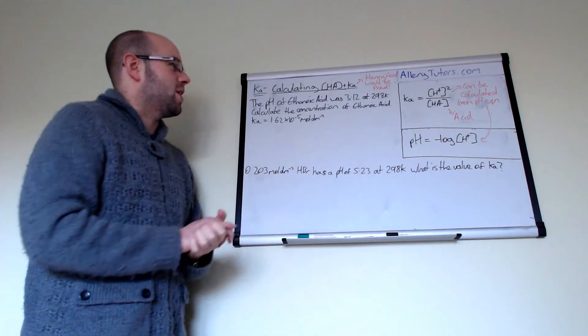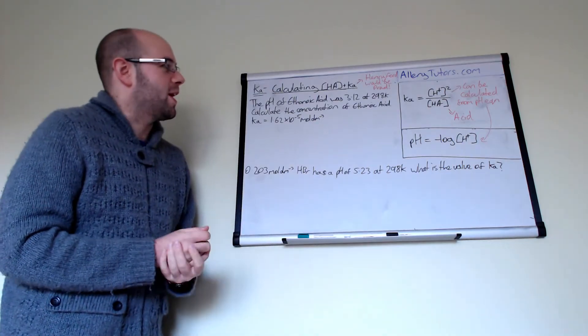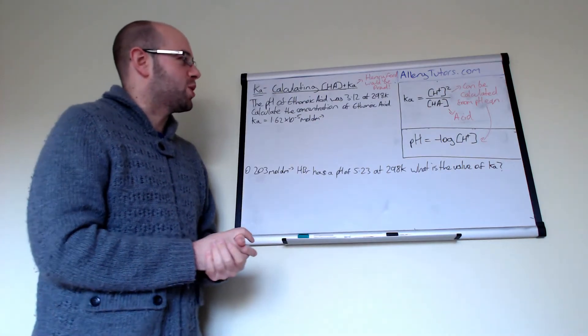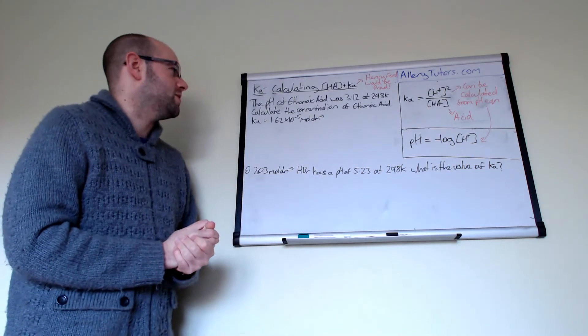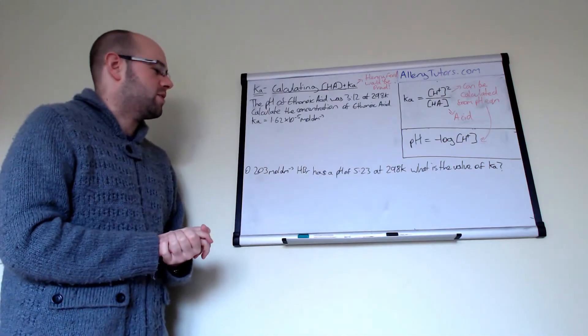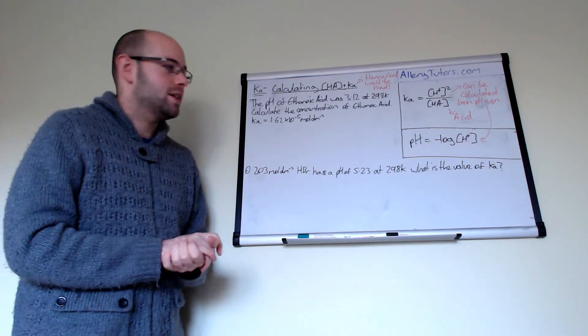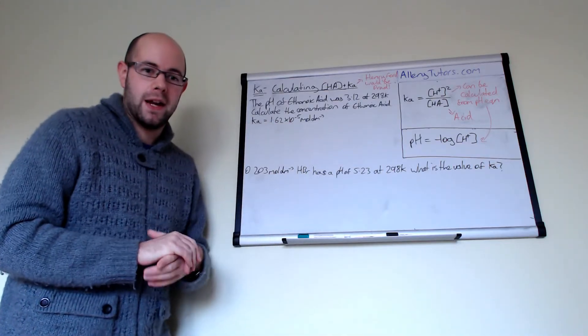The pH of ethanoic acid was 3.12 at 290 Kelvin. Calculate the concentration of ethanoic acid, and we've got the Ka expression here.